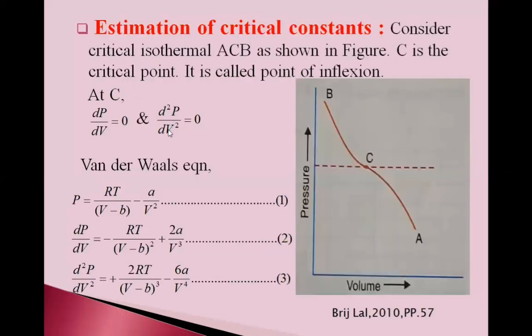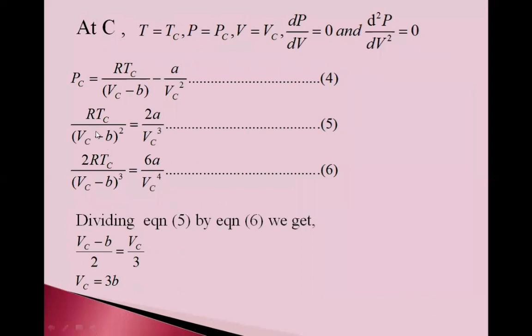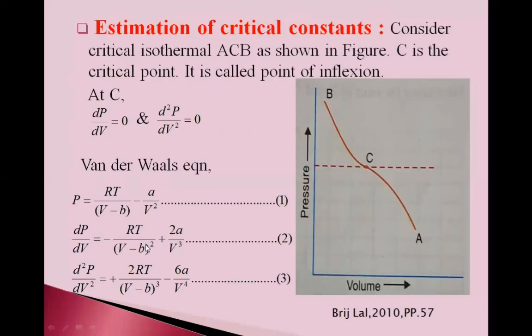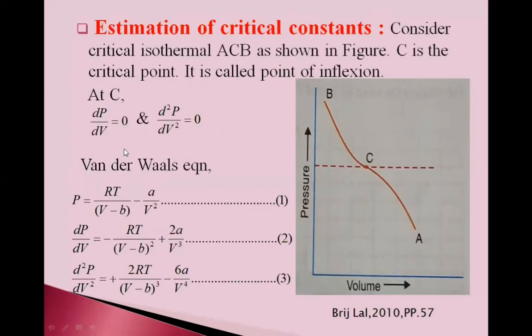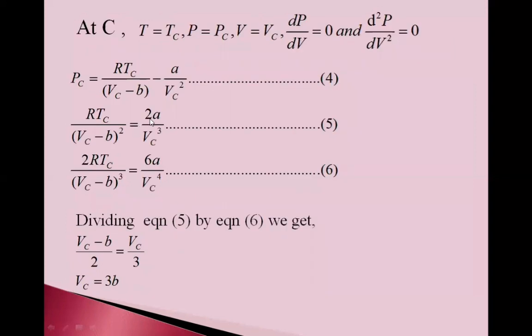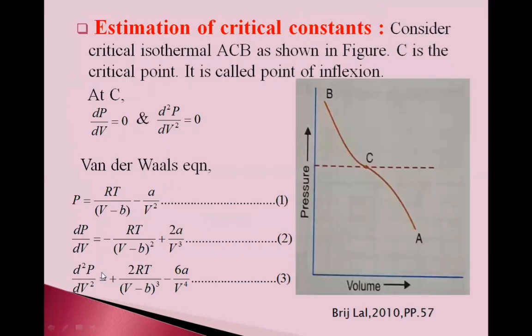And take equation 2. Here dP by dV is 0. So, put here T is equal to Tc, V is equal to Vc. And again, we can write RTc upon Vc minus b square. And see, this minus sign becomes plus sign if we move this to this side. So see here, it is equal to 2a upon Vc cube. Equation 5.